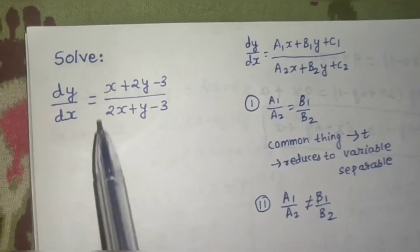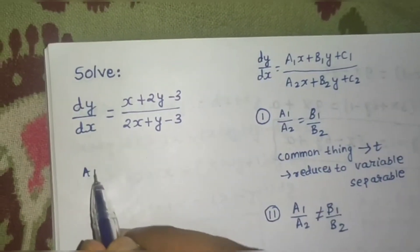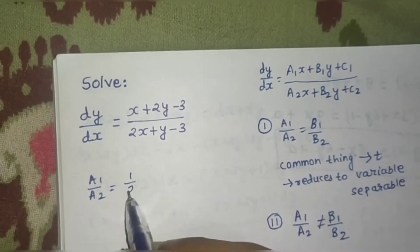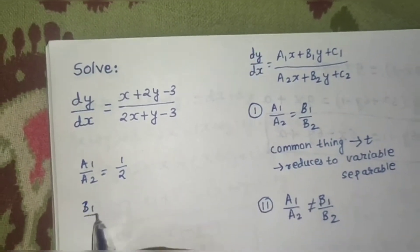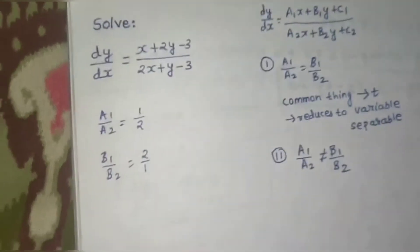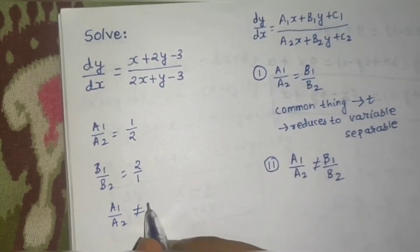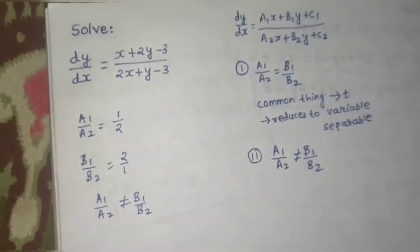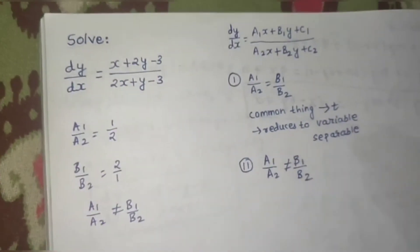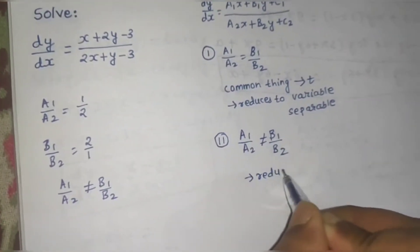In this question, a1/a2 is the ratio of the coefficients of x, which is 1/2. And b1/b2 is the ratio of coefficients of y, which is 2/1. So obviously a1/a2 is not equal to b1/b2. So we will follow some steps after which this will reduce to a homogeneous equation — which is interesting.